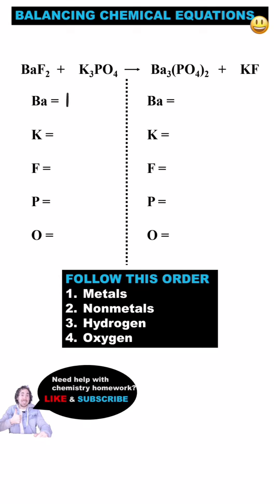In this equation, there's 1 barium on the reactant side and 3 on the products, 3 potassium and 1 on the products, 2 fluorine and then 1 over on the products, 1 phosphorus here and 2 on the products, and then 4 oxygen on the reactant side and 8 on the product side.